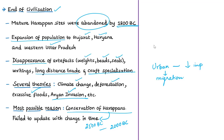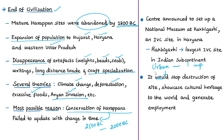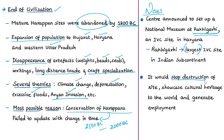The news article mentions that the government has announced the development of the Harappan site at Rakigadi, which will be developed into an iconic site with a national museum. Rakigadi spreads across 500 acres and is the largest Harappan site in the Indian subcontinent. This initiative is expected to stop destruction of the site, showcase its rich cultural heritage, improve connectivity, increase tourism, and create local jobs.